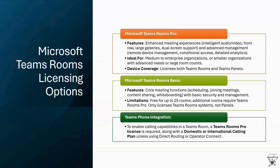The Microsoft Teams Rooms Basic license provides core meeting experiences for certified Teams Rooms systems at no additional cost. The Teams Rooms Basic license includes scheduling, joining meetings, content sharing, and collaborative whiteboard, as well as basic security and management capabilities out of the box. You can assign up to 25 Microsoft Teams Rooms Basic licenses to Teams Rooms systems in your organization. If you need to license more than 25 Teams Rooms systems, those additional licenses will need to be Teams Rooms Pro licenses. Teams Rooms Basic licenses can be used to license Teams Rooms systems only and not Teams Panels.